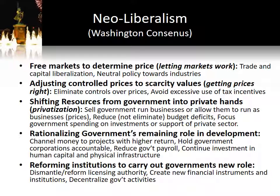The guiding principles of the Washington Consensus fell into these categories. First, you had to free your domestic markets to determine prices — let the market work. You need to liberalize trade and capital flows, adopt neutral policies towards industries, not try to spur the development of one industry versus another. Don't pick winners — let the market decide who's going to win.